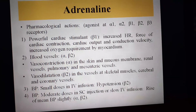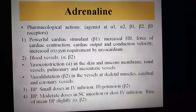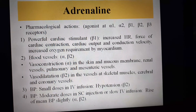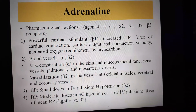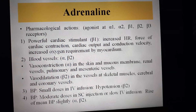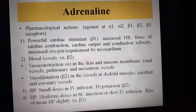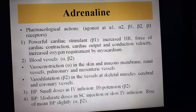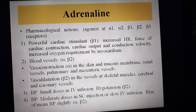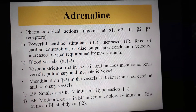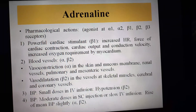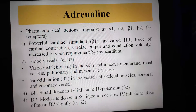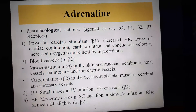Regarding the effect of Adrenaline on blood pressure: small doses given by intravenous infusion cause hypotension, because Adrenaline predominantly acts at beta-2 receptors at low doses. At low doses it also acts on beta-1 receptors, but at high doses it acts on alpha receptors. So in small doses given by IV infusion, it mainly causes tachycardia and hypotension.